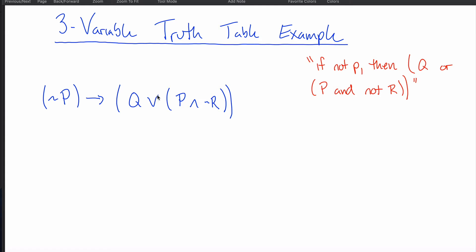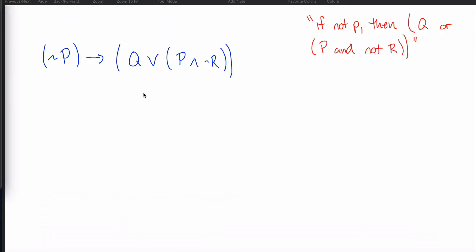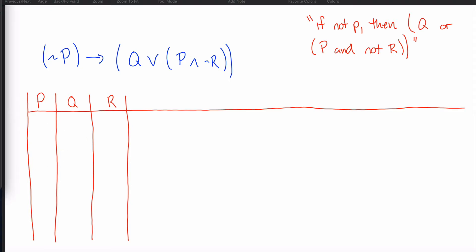What you see in blue is the exact same question asked in red. The first step is to set up our truth table. Because there are three variables — P, Q, and R — we need columns for each, which creates eight different rows. The reason there are eight is two times two times two equals eight. These rows don't have to be written in the order I'm about to write them, but this is the standard order.